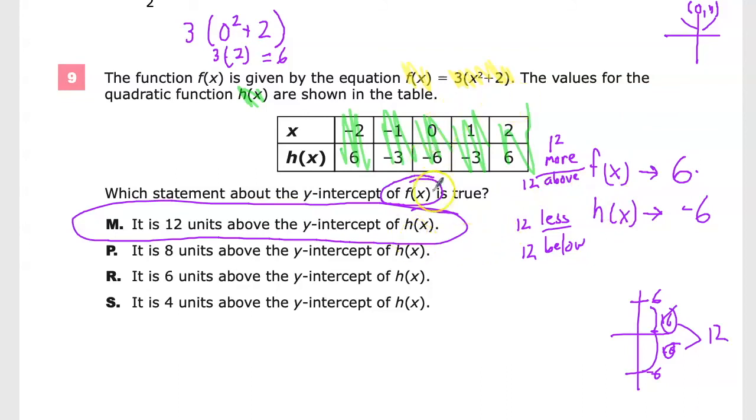If you need to find the y-intercept, remember that means the x value is 0. On the graph, you can figure that out graphically. In table form, you want to find where x is 0 and that's the y. And then if you have the function, just substitute the value of 0 in for x and you can find the matching y value to find your intercept.